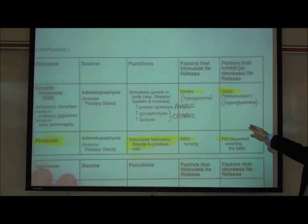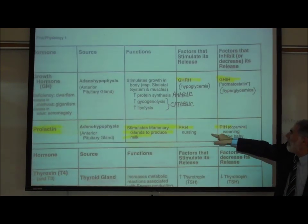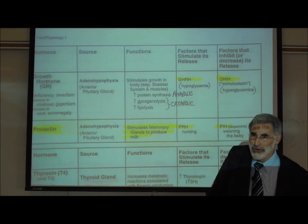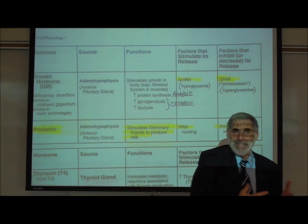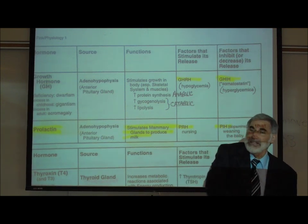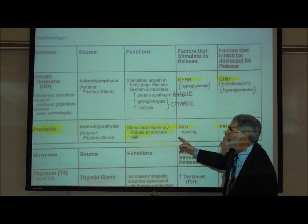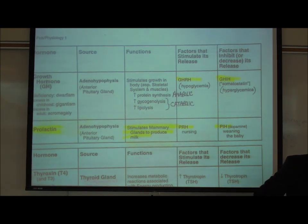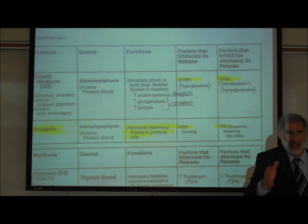Again, why in the case of growth hormone, just like in prolactin, why did we have an RH and an IH? Because there's no negative feedback loop. Growth hormone is not a tropic hormone that affects another endocrine gland. Neither is prolactin. The pituitary hormones that affect other endocrine glands follow a negative feedback loop, with the exception of sperm production and egg production.